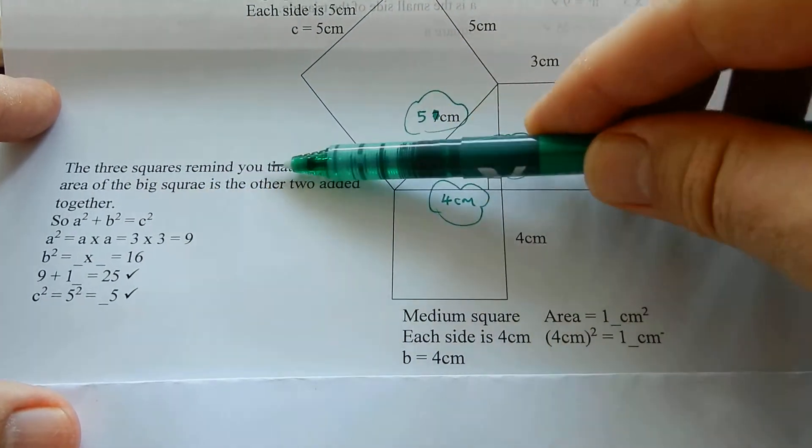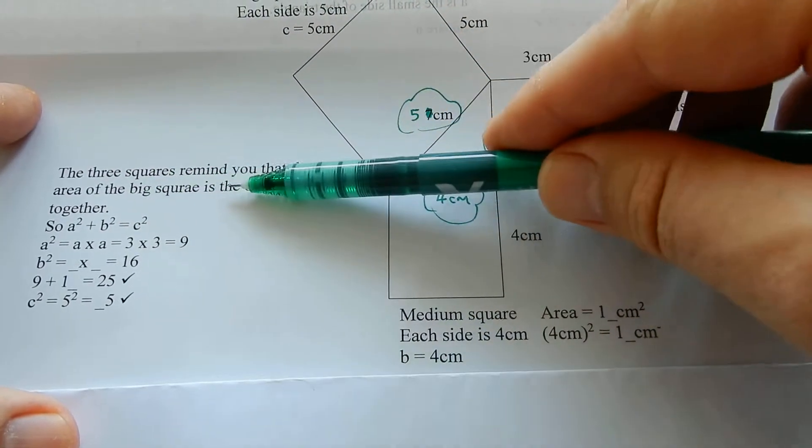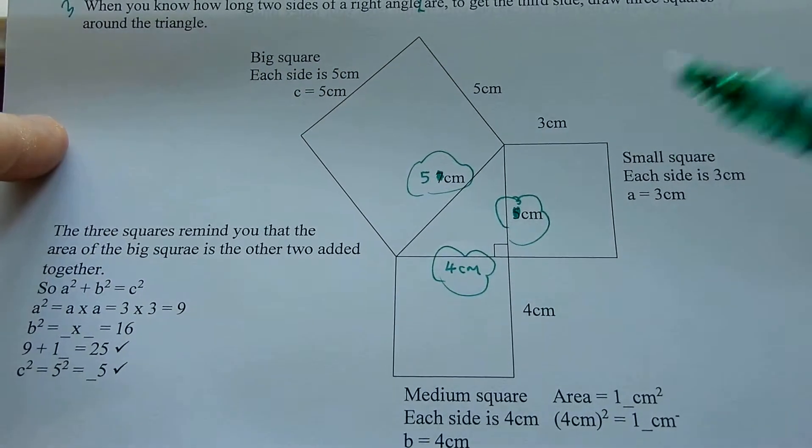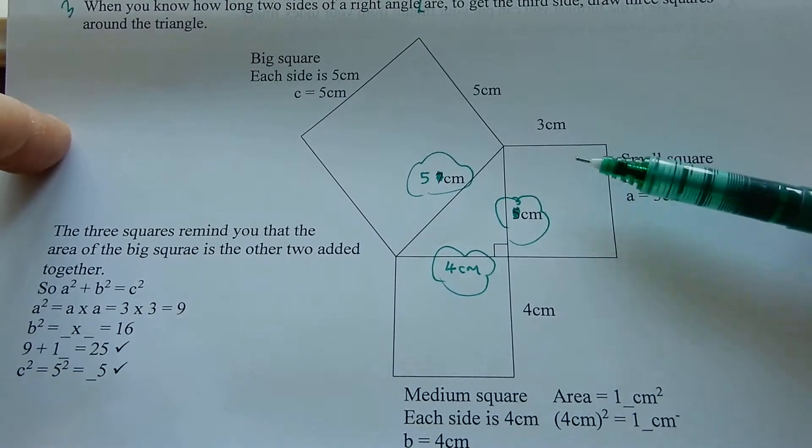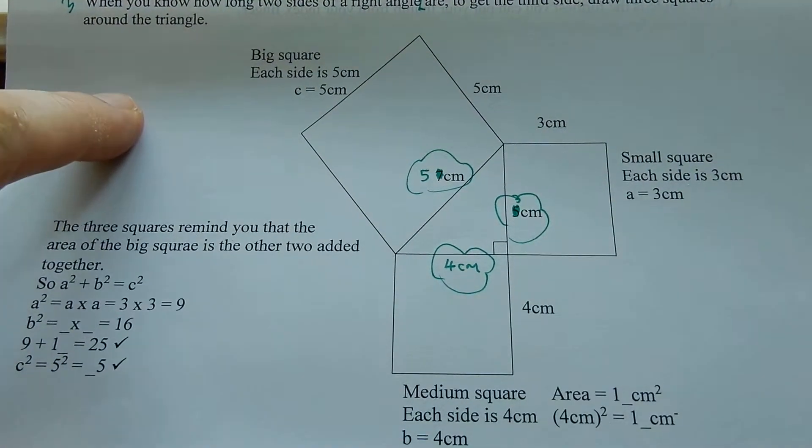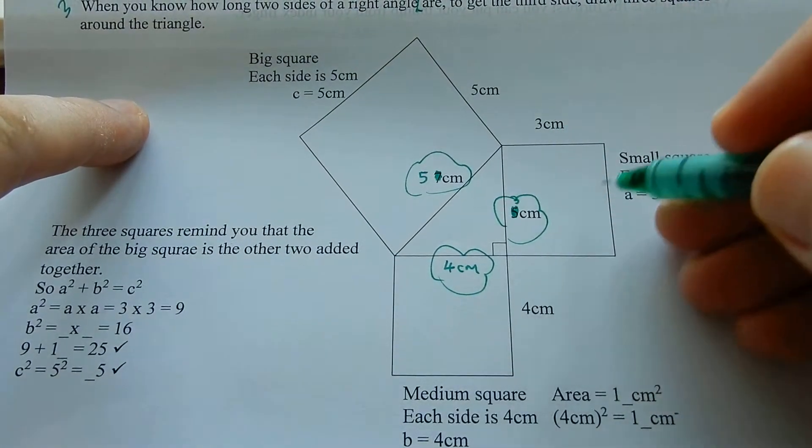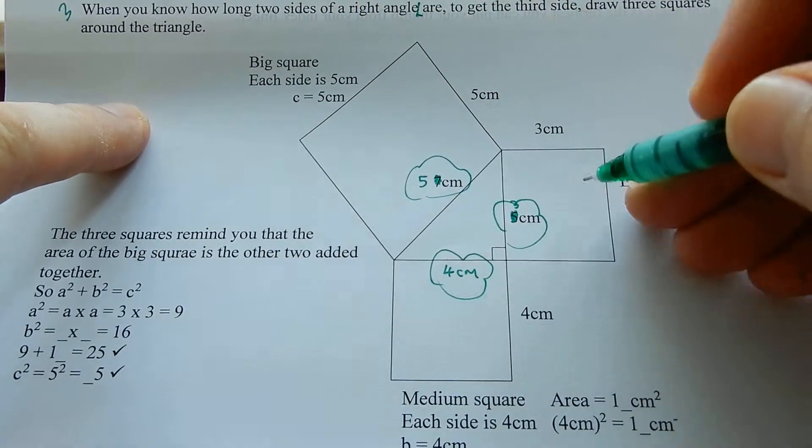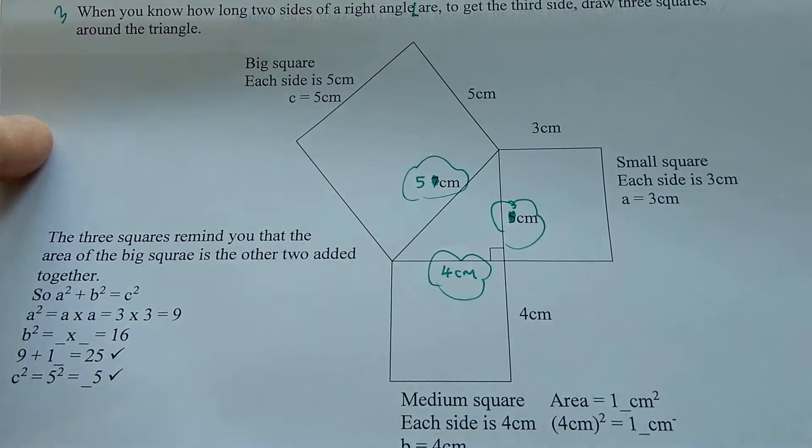The three squares remind you that the area of the big square is the other two added together. You can see that this is the big square. This area plus this area. Area is how long it would take to shade it in.